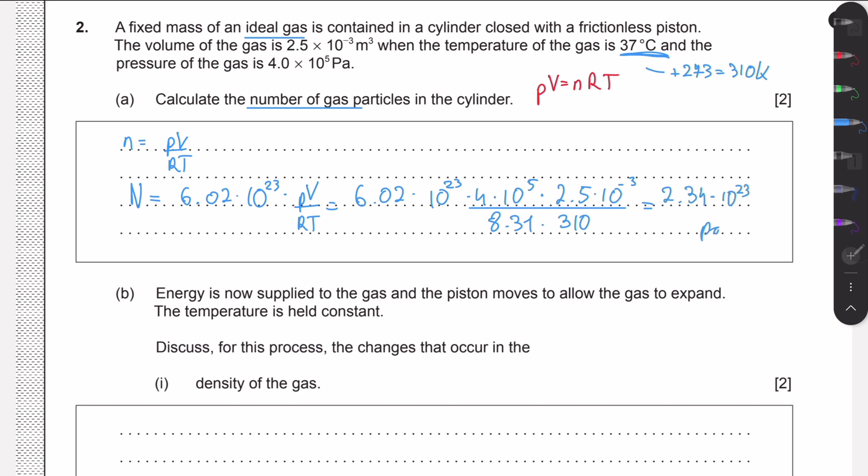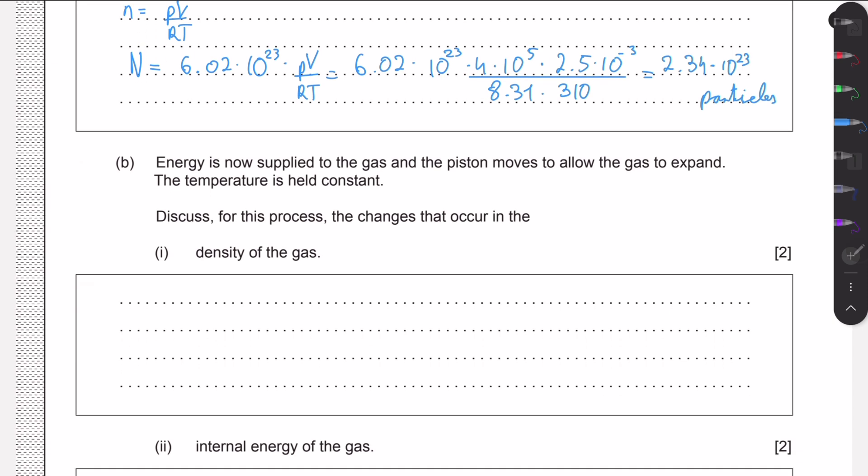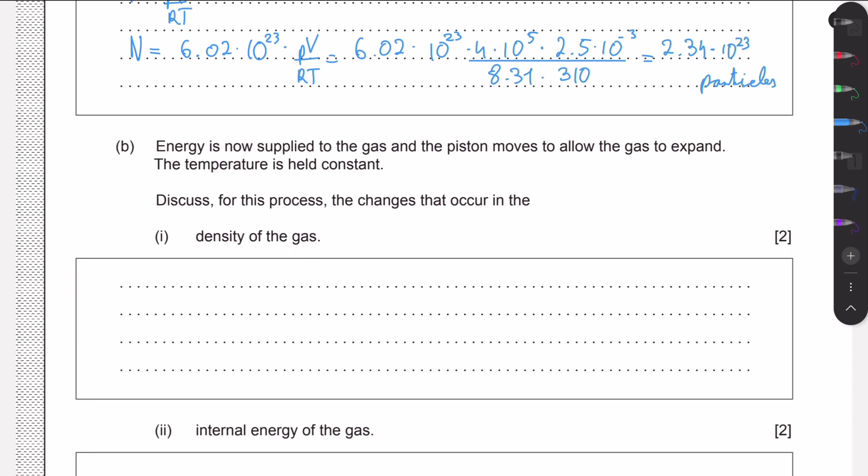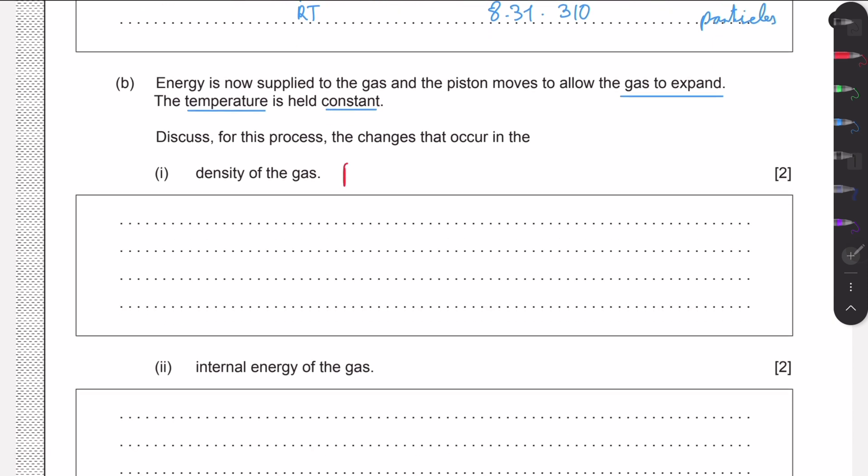So it's just a simple application of this formula. Now we're told that energy is supplied to the gas and the piston moves so that the gas can expand. Temperature is constant. For this process, we need to discuss the changes in the density of the gas. Density is just mass over volume, and the mass is constant as we don't introduce new air particles.